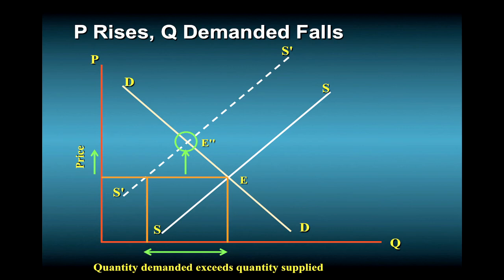Thus, a bad harvest, or any leftward shift of the supply curve, raises prices and, by the law of downward sloping demand, lowers quantity demanded.